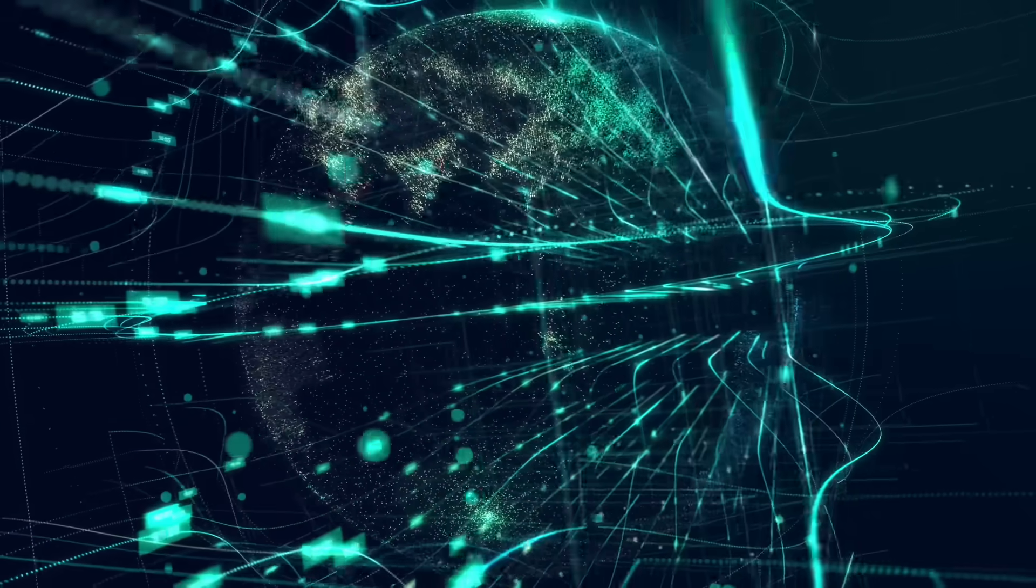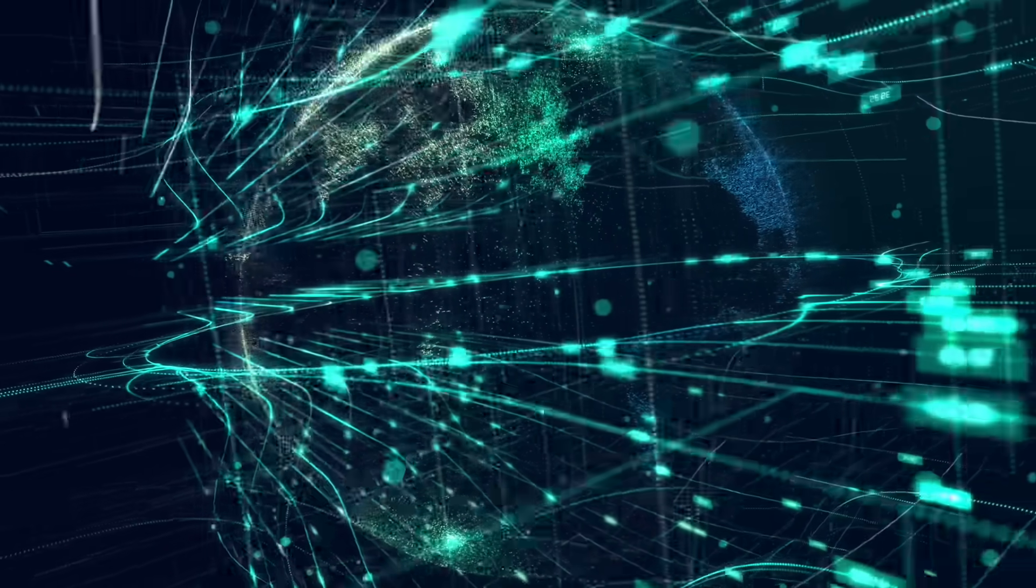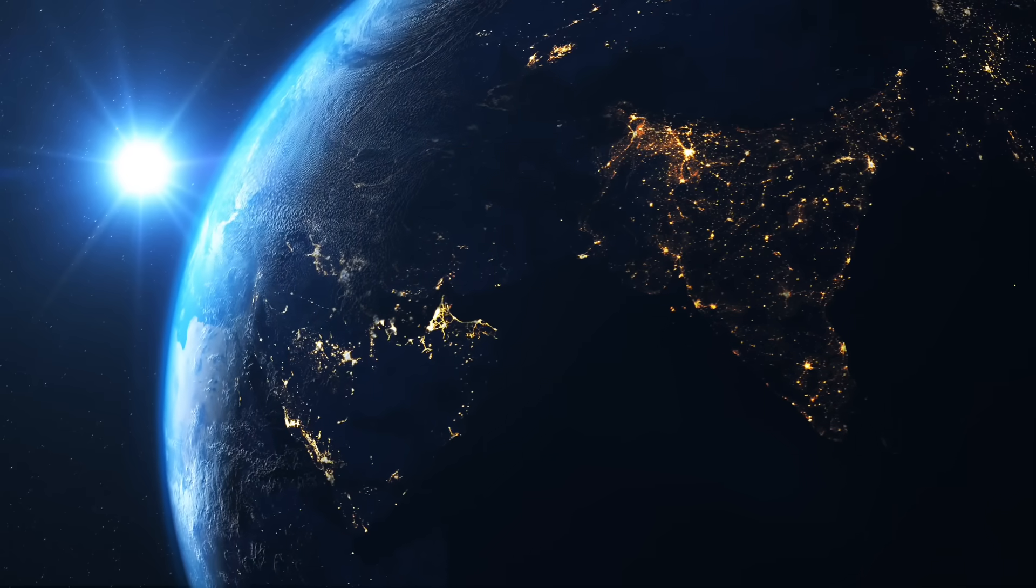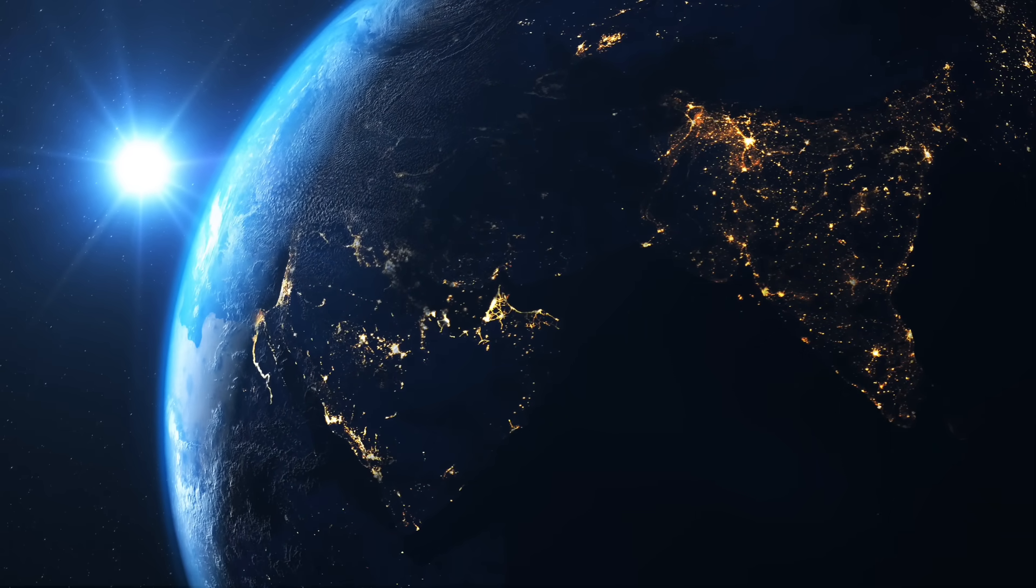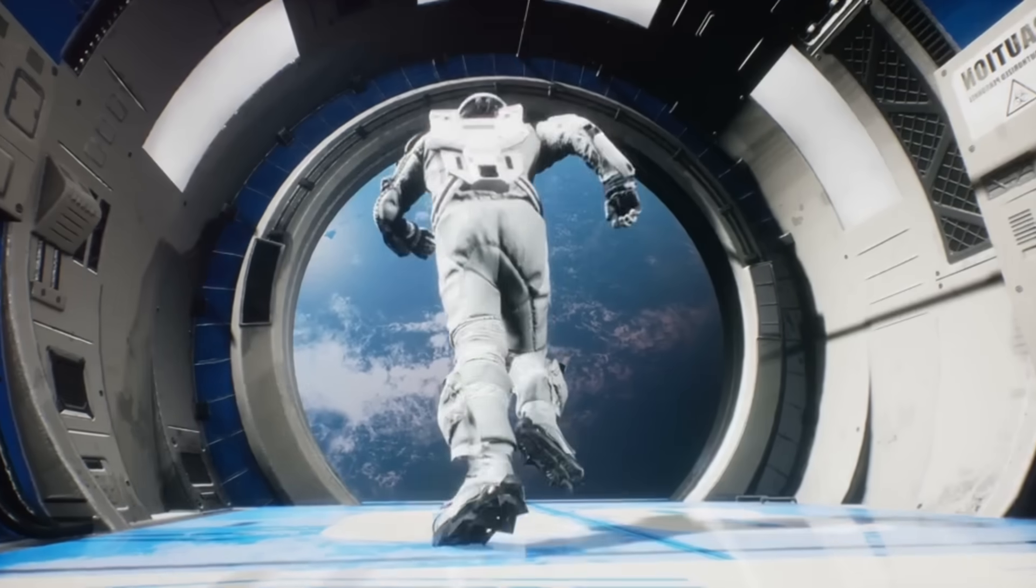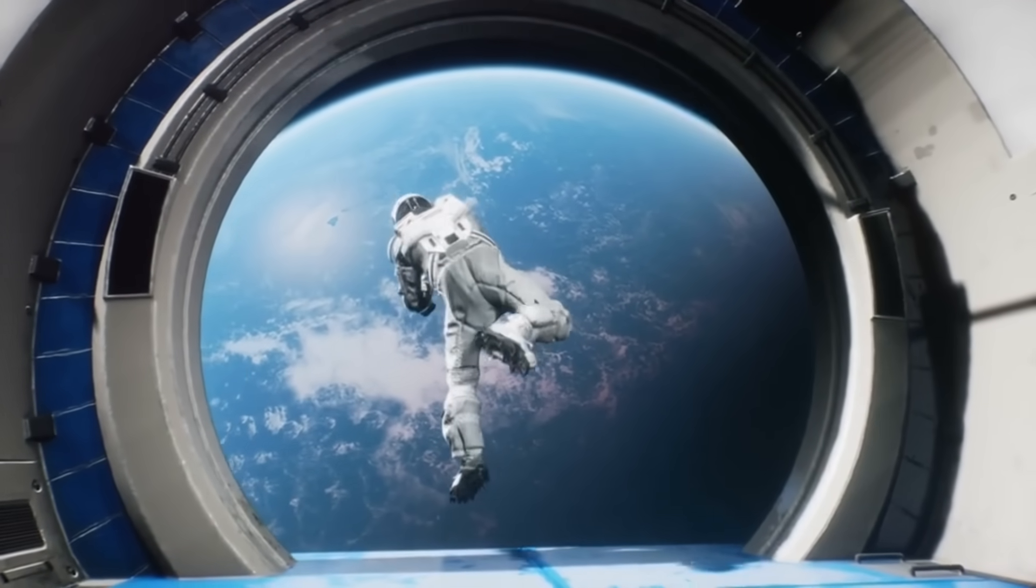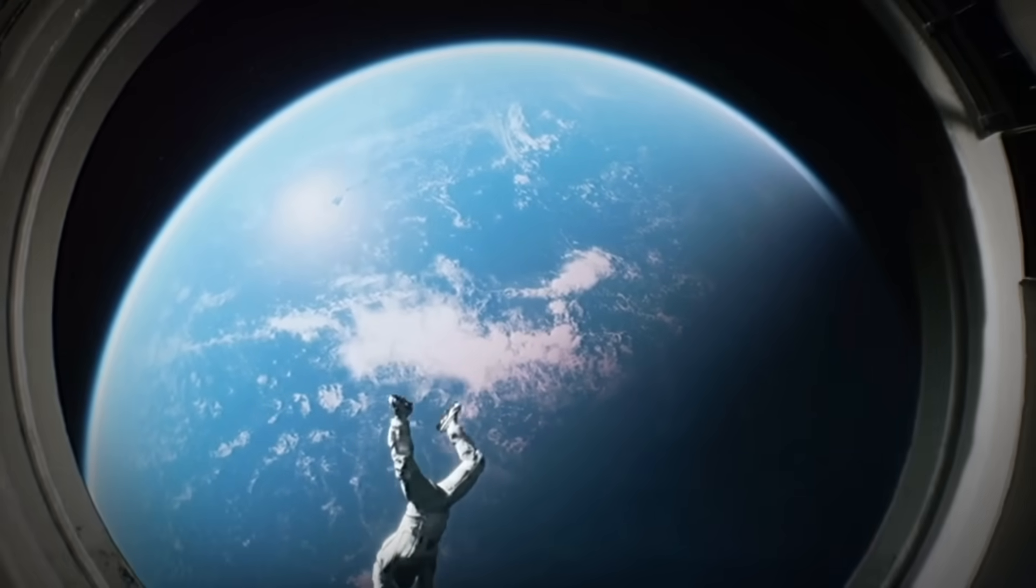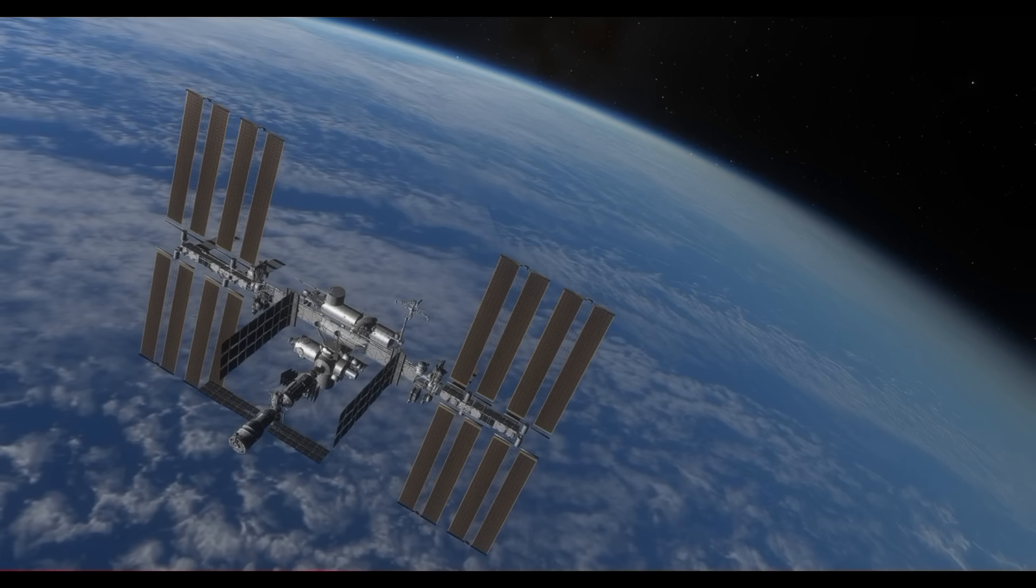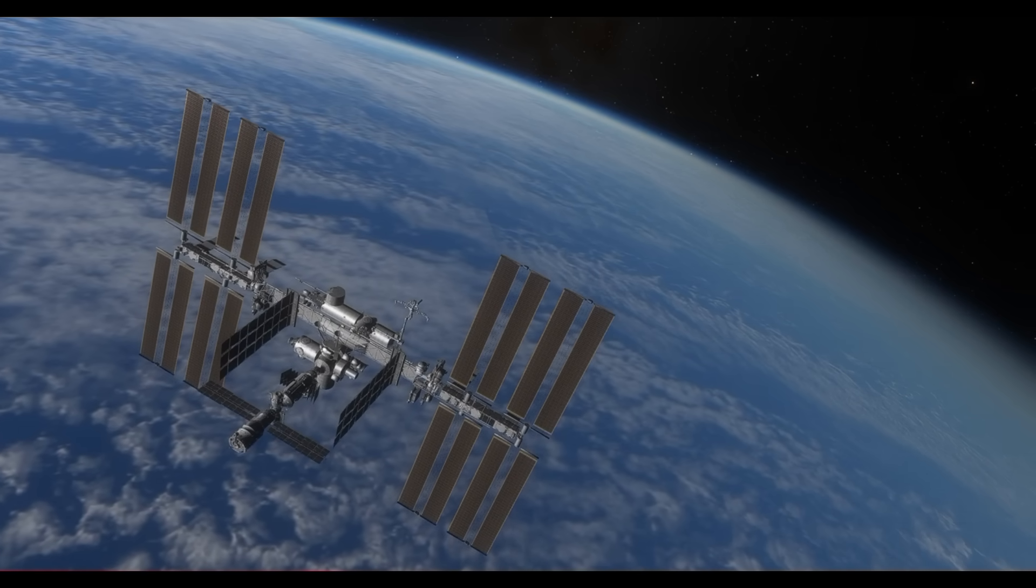Remember those science fiction movies from the 60s? Rockets landing vertically? That's exactly what SpaceX does. Nine Merlin engines slow the rocket down, grid fins control its orientation, and deployable landing legs catch it. The first attempts? Spectacular explosions. SpaceX released an entire video of landing failures and learned from every single one.